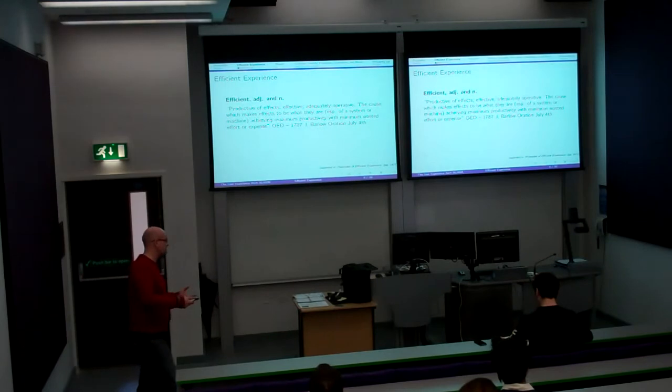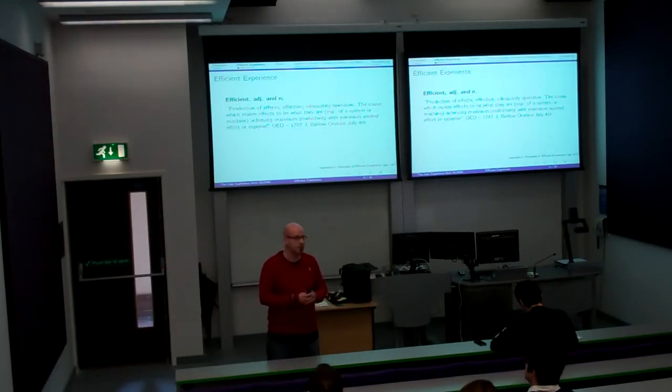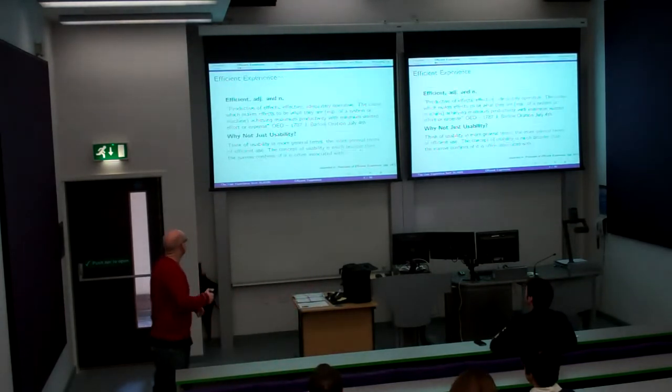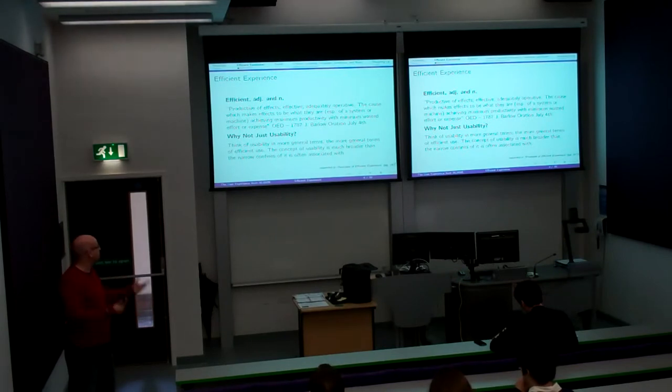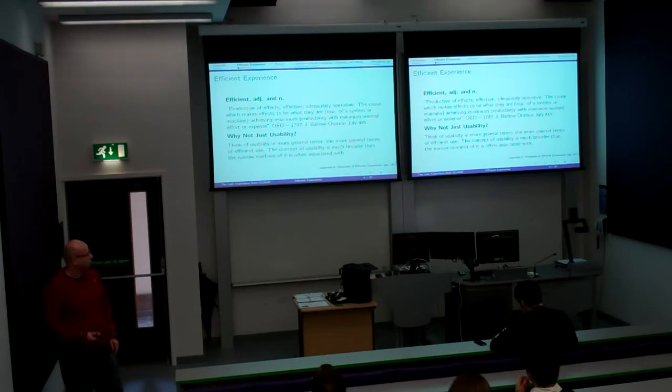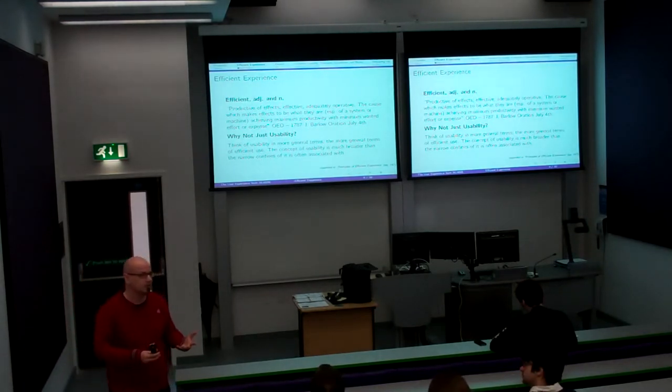That's why usability is always based on metrics, mainly. It's always based on things you can measure. It's very, very objective. Think of usability more in general terms. The more general terms are efficient use. The concept of usability is much broader than the narrow kind which are often associated with this usability metric. Efficient use might mean lots of things.